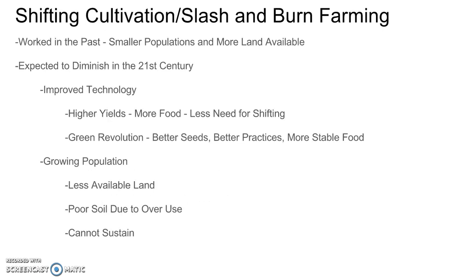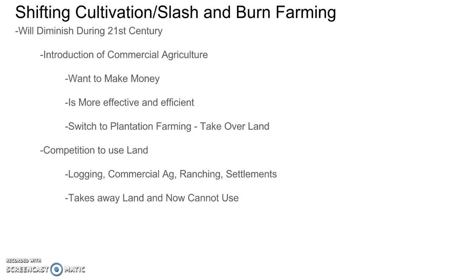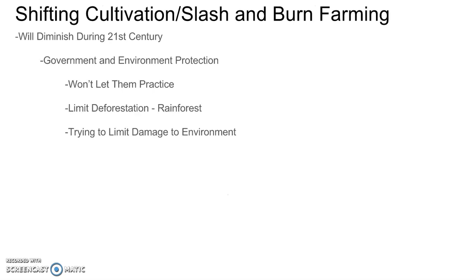To review why shifting cultivation will diminish in the 21st century: improved technology like higher yields and the Green Revolution brings better seeds and a more stable food supply; growing population means less available land that cannot sustain; introduction of commercial agriculture is a better use of the land to make money; competition from loggers, commercial agriculture, ranching, and settlements will take away the land; and finally, government and environmental protection groups will limit deforestation and damage to the environment. This puts all these groups at odds with indigenous groups whose folk culture for generations has depended upon this.